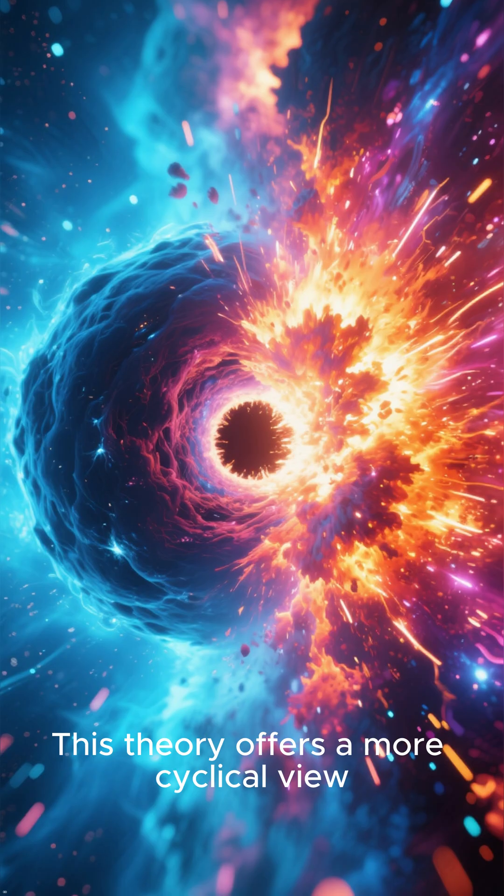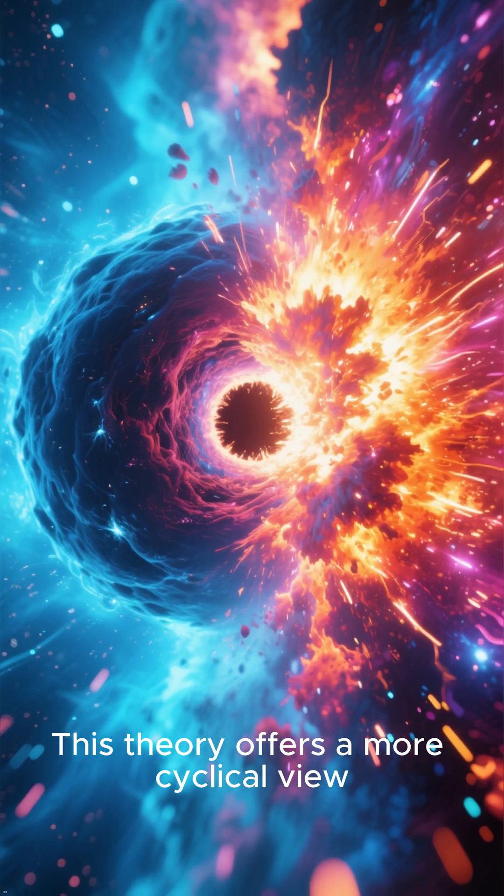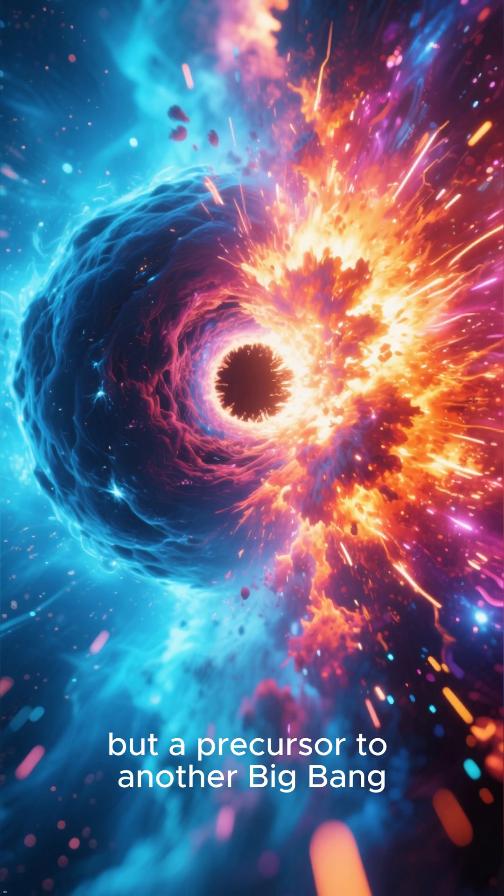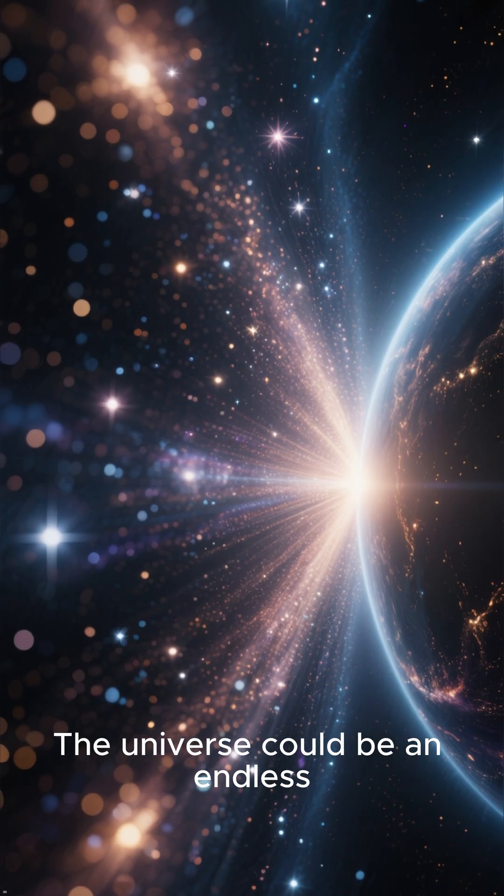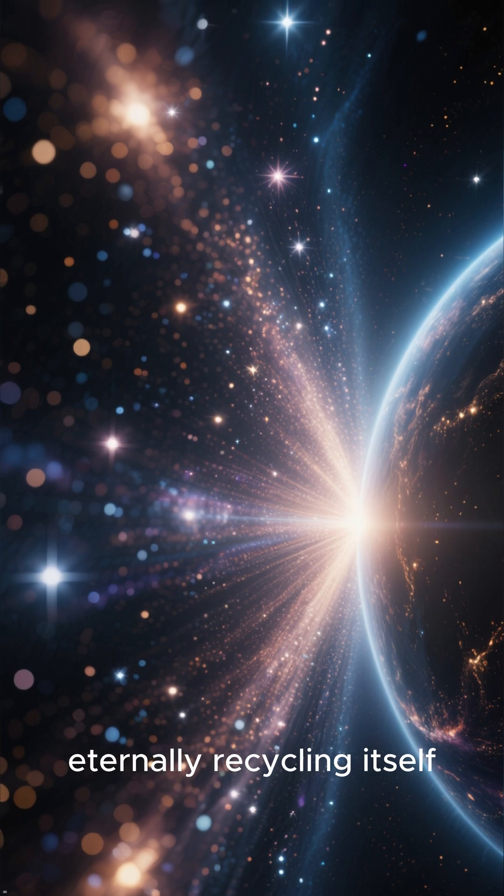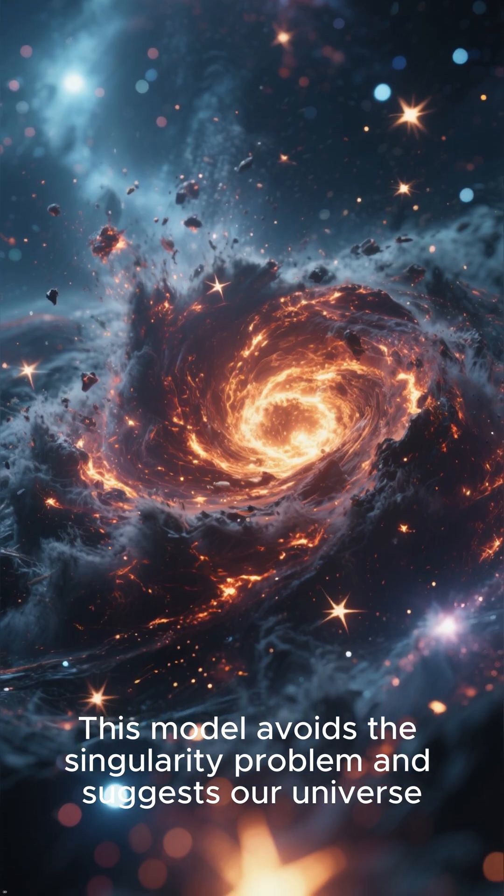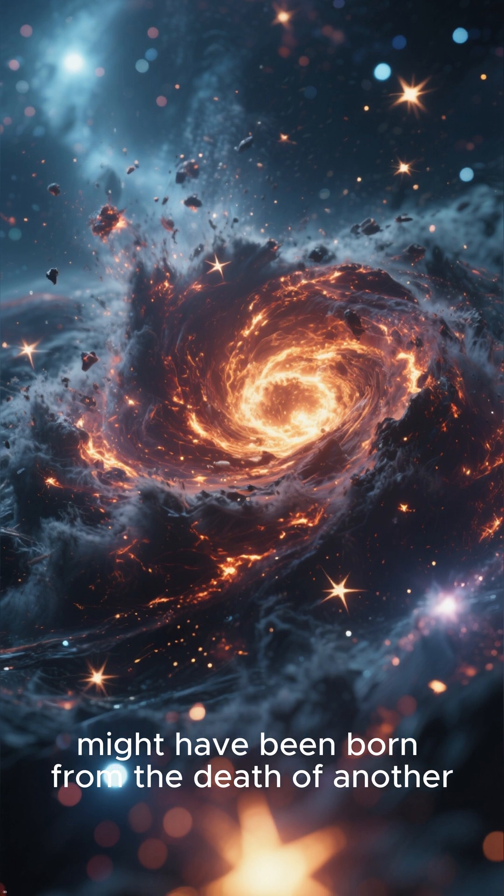Number 2: The Big Bounce. This theory offers a more cyclical view. The Big Bounce suggests that a big crunch is not the end, but a precursor to another Big Bang. The universe could be an endless series of expansions and contractions, eternally recycling itself. This model avoids the singularity problem and suggests our universe might have been born from the death of another. A cosmic reincarnation.